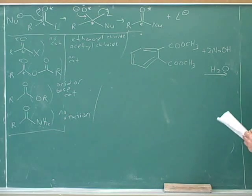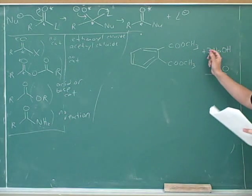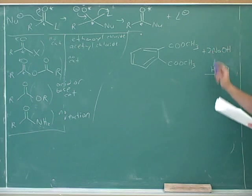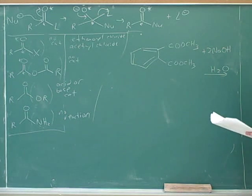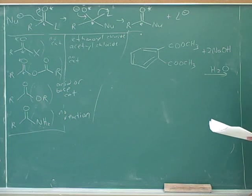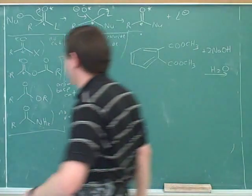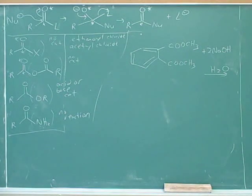So let's try to predict the products here. We have this starting material, two equivalents of sodium hydroxide and water. If you want to, you can go through the mechanism, although that might take a while. But if you think you can, you can just draw the products. You can do the mechanism, or if you want to, you can just try to draw the products.